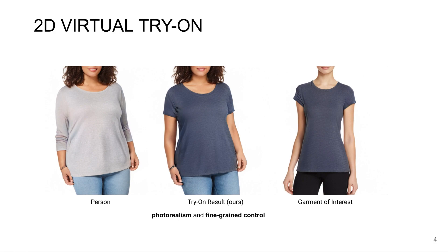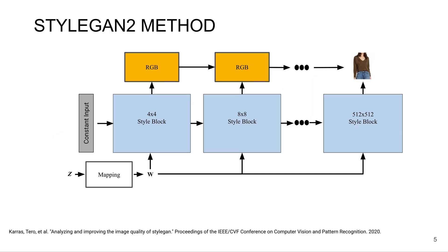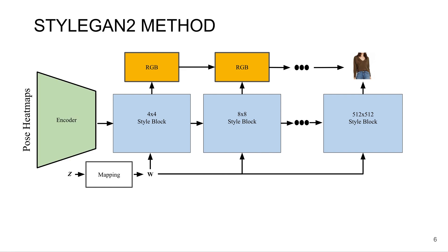So now I'll talk about how we do this. We wanted to build our method off of StyleGAN2, since we wanted to focus on photorealism. But we had to make a couple of architecture changes. The first is replacing the constant input to the generator with the pose conditioning input.